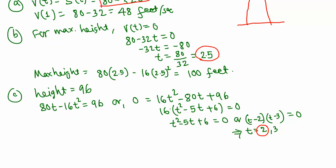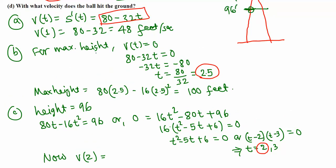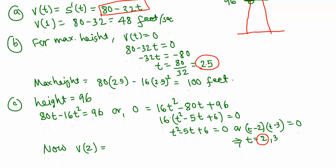Velocity after 2 seconds: using the velocity function from part A, v(t) equals 80 minus 32t. Substituting t equals 2, we get 80 minus 32 times 2, which is 80 minus 64, giving 16 feet per second.